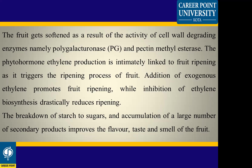Phytohormone ethylene plays a role in fruit ripening. Exogenous ethylene promotes and increases the fruit ripening process. When starch breaks down into sugars, the secondary metabolites improve — the flavor, taste and smell of the fruit also improve and increase.